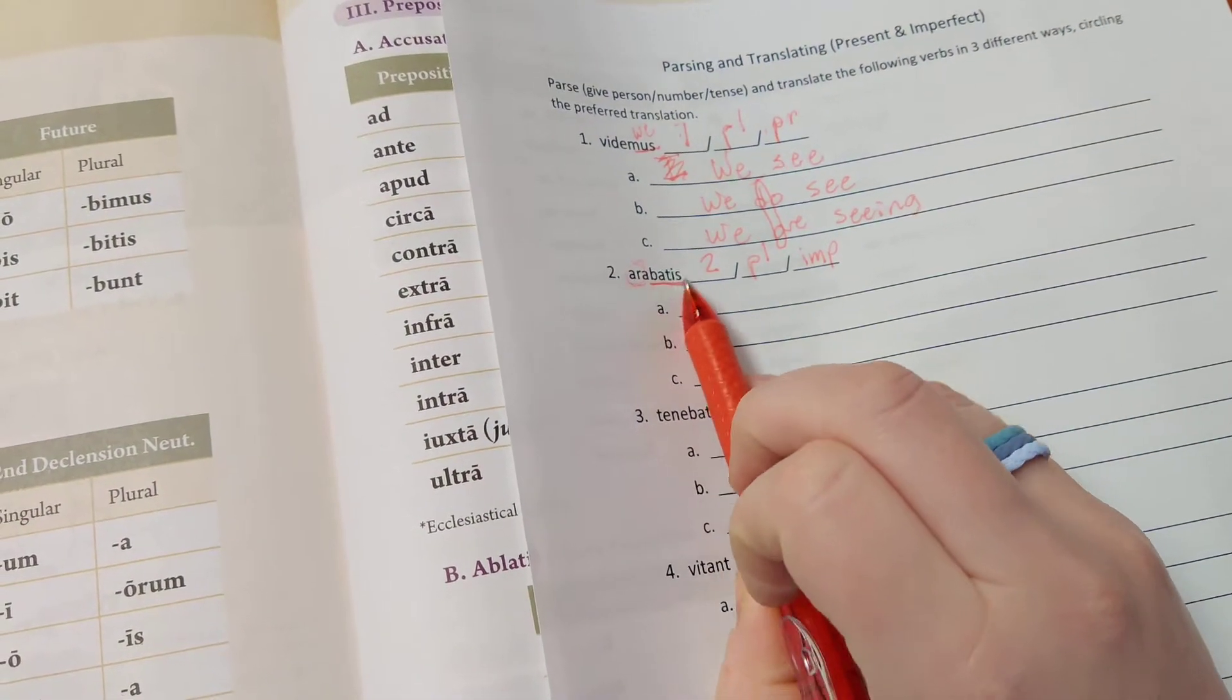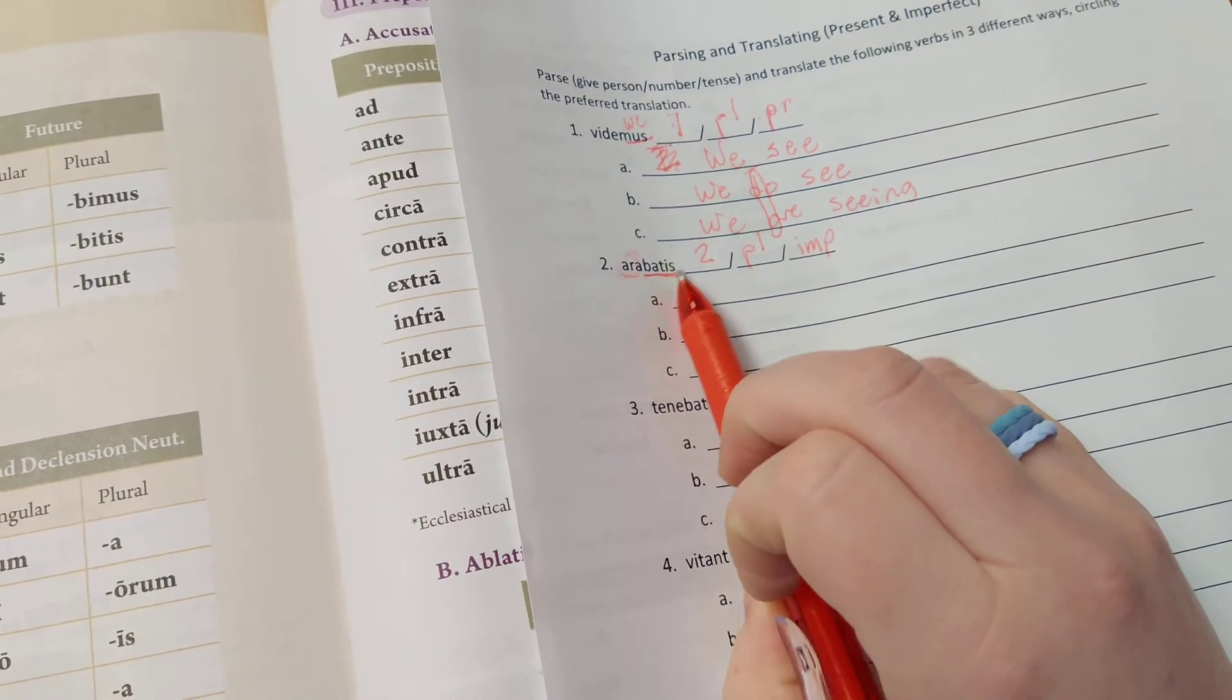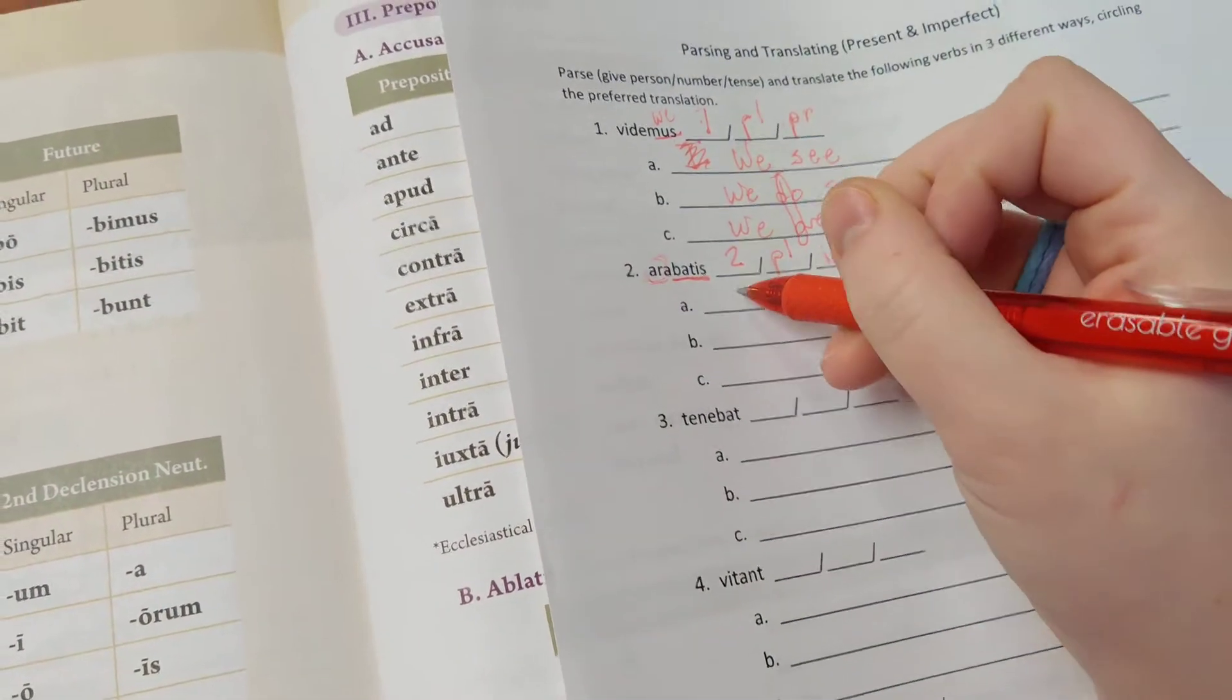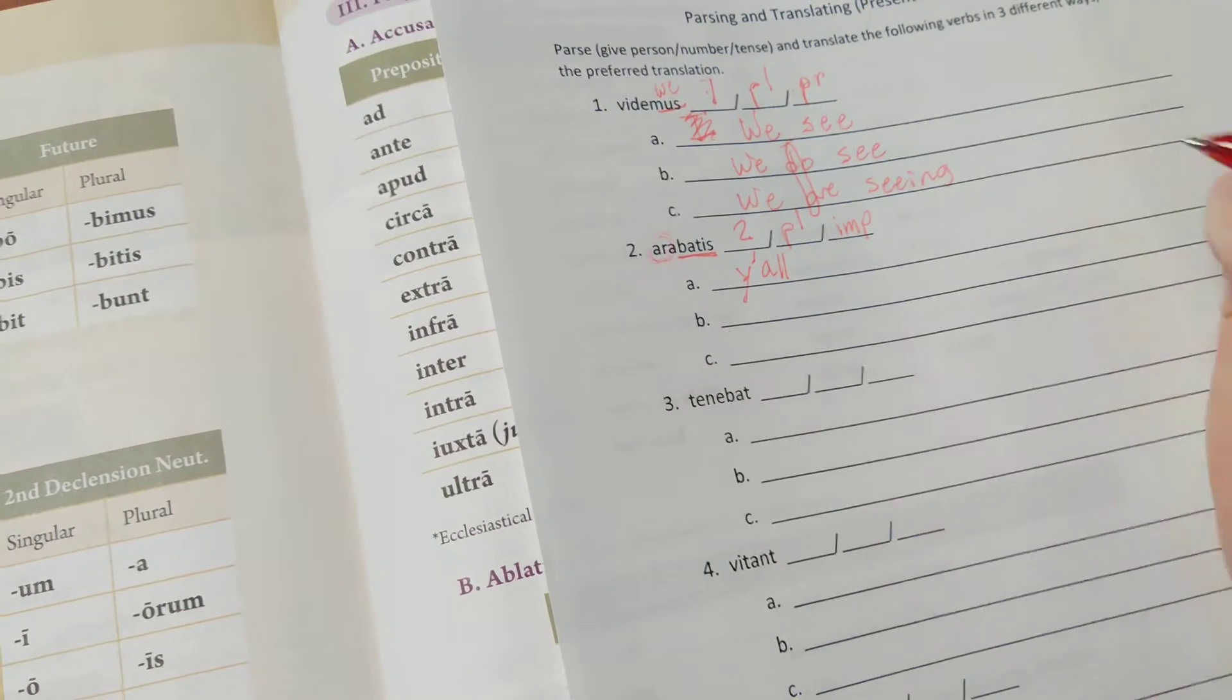So second plural imperfect. Now -tis: -mus means we, -tis means you and you. So -tis is the plural you. We shorten that by saying y'all.